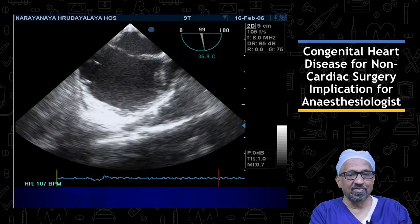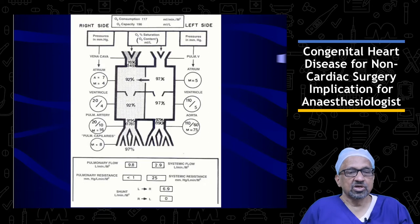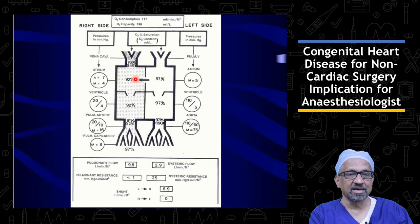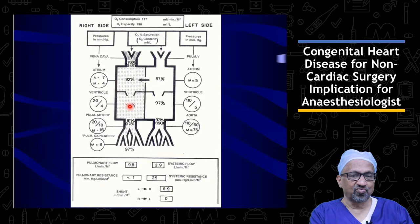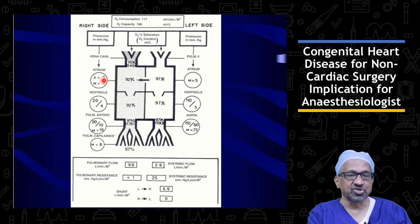Looking at the catheterization data in this patient, because of the presence of the left-to-right shunt at the atrial level, the right atrial saturation is increased, and the same blood is flowing to the right ventricle and the pulmonary artery. The right ventricular saturation is 92% and the pulmonary artery saturation is 92%. The right atrial pressure is normal, the right ventricular pressure is normal, and the pulmonary artery pressure is also normal.